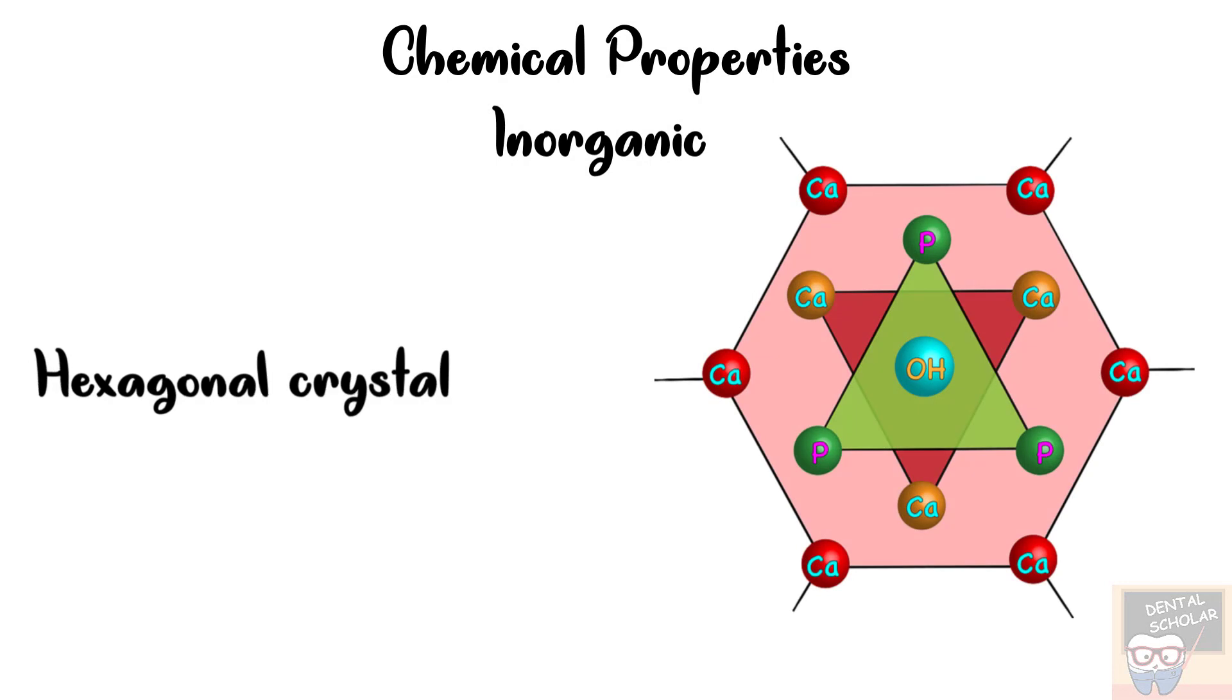The hydroxyapatite crystal is hexagonal in shape. In its core is the hydroxyl ion which is surrounded by three atoms of calcium. These are then surrounded by three phosphate molecules and finally at the periphery we again have calcium. The calcium in the outer circle or at the periphery are shared by three adjacent crystals. So one crystal gets only one third of each calcium in the outer ring or the outer circle.